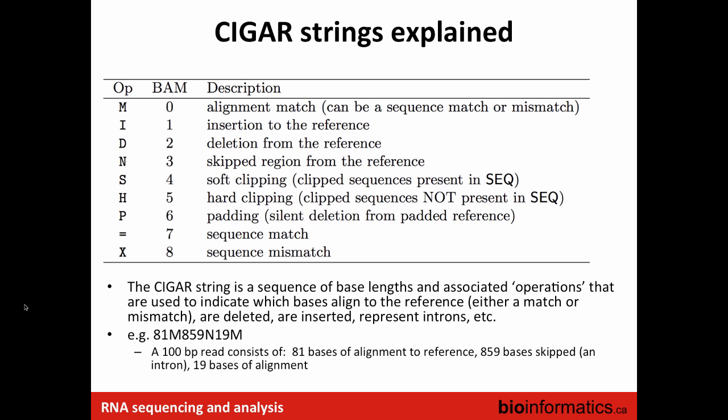What's a secondary alignment? If the read aligns to multiple places, the primary alignment would be the best alignment. If there are other locations for that alignment with lower quality, those would be considered secondary alignments.